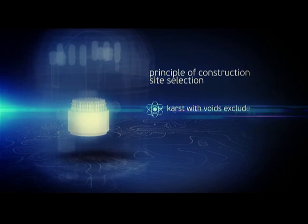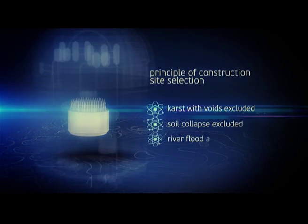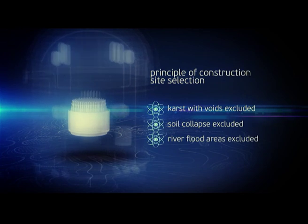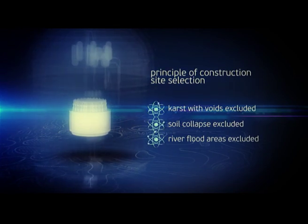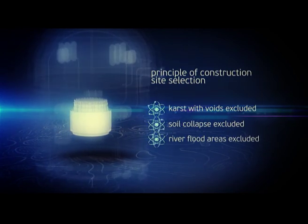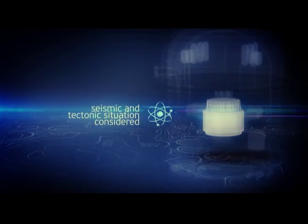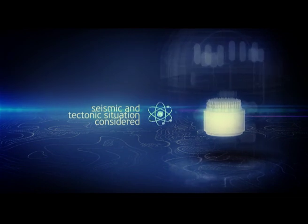One more element of the plant safety is the principle used for selection of a construction site. The site is selected by more than 20 parameters. Sites featuring karsts with voids, soil collapse, and river floods are excluded. A prime focus is on seismic and tectonic features of the plant hosting region.